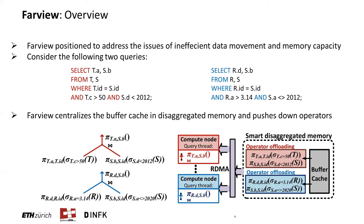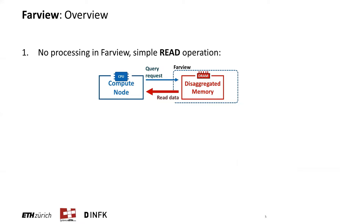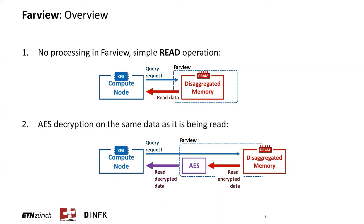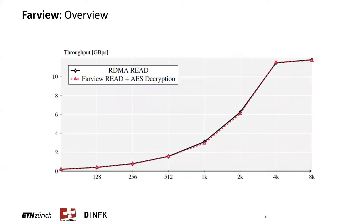To accentuate this point, we compare a case where we're not doing any processing in Farview — just performing a simple RDMA read — to a case where we're performing an additional AES decryption on the same data as it is being read. As the encryption operator is highly parallelized and fully pipelined, it is able to easily sustain the network line rate. The added latency is also small in comparison to the network and memory operations, so this decryption is very nicely hidden behind these other operations. As can be seen in the figure here, the performance is virtually the same, even though in the second case we are performing meaningful work as well. All operators in Farview are implemented in the same fashion, so effectively the processing in Farview functions as a bump in the wire between the memory and the high-performance network.